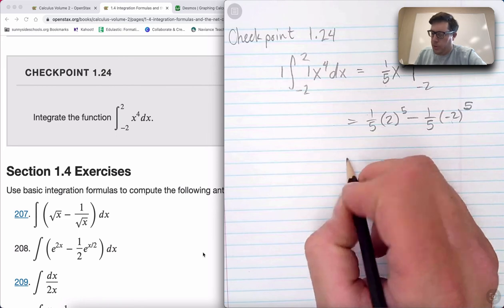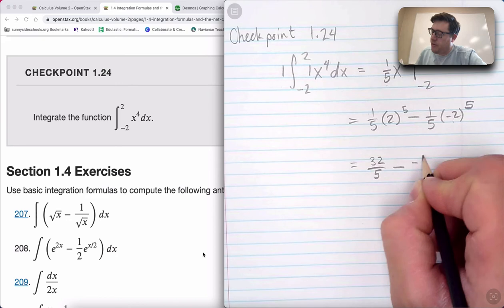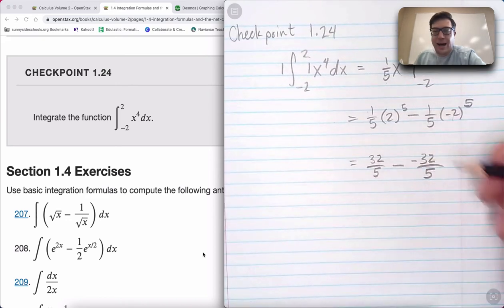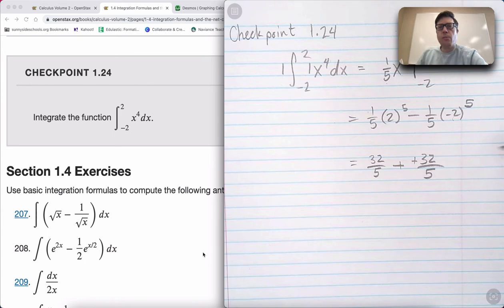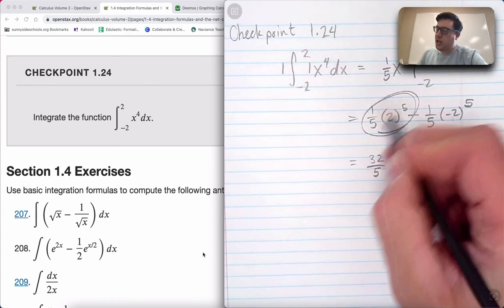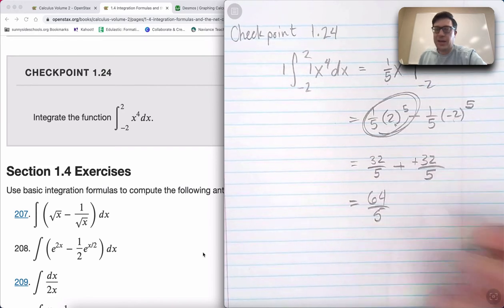So I have 32 over five minus negative 32 over five, and I'm highlighting the fact that it's negative to let you know, add them together. It's almost as if we could have just doubled the first one, 64 over five. In fact, that's the idea behind an odd function.